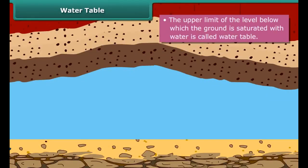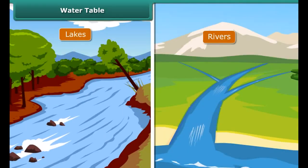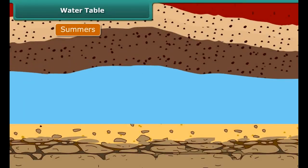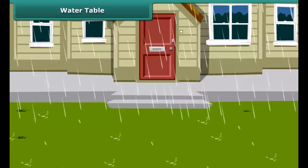The upper limit of the level below which the ground is saturated with water is called the water table. Groundwater is the water found below the water table. Runoff from lakes and rivers, melting snow, and rain lead to the formation of the water table. Seasonal fluctuations in the water table are common — during summers the water table goes down, but during monsoon its level rises.